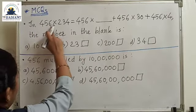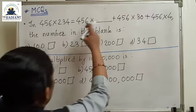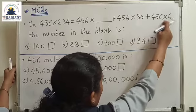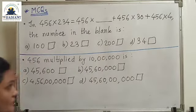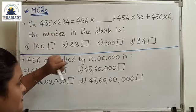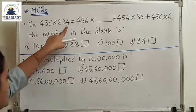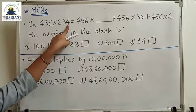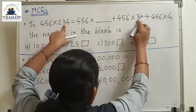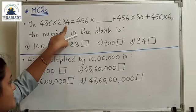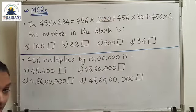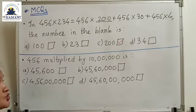In 456 multiplied by 234 equals 456 multiplied by blank plus 456 multiplied by 30 plus 456 multiplied by 4 — the number in the blank is: 100, 23, 200, or 34? In multiplication, we start from 4 (ones), then 30 (tens), then the hundreds. So the blank represents 456 multiplied by 200. Our answer is option C: 200.